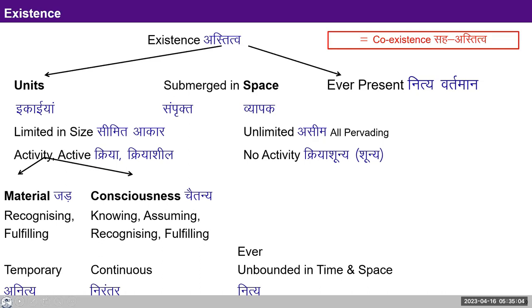If you look at the consciousness unit — the self — the self is continuous. We are not talking of a birth and death of the self; the self is continuous in time, but it is still limited in size. There are three realities: the material reality, for example the body; the consciousness reality, that is the self; and the space. To understand how they interact and are interconnected, we have to understand each reality — that is what we are trying to do in this process.